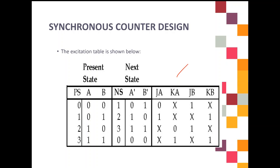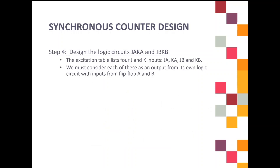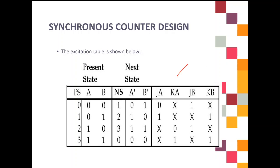Next, design the logic circuit — this involves two steps: simplify the excitation table, and then draw the counter circuit. You need to simplify each value of J and K. Since this excitation table has four J and K values — JA, KA, JB, KB — you need four K-maps to simplify each J and K.